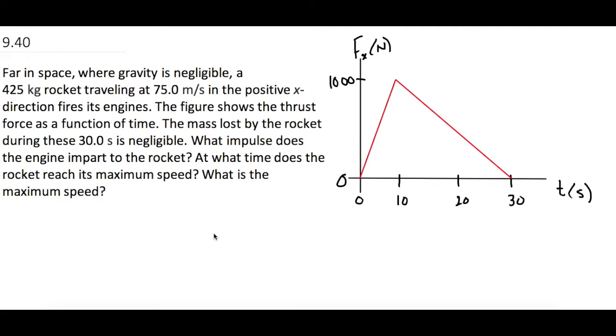Far in space where gravity is negligible, a 425 kilogram rocket traveling at 75 meters per second in the positive x direction fires its engines. The figure shows the thrust force as a function of time. The mass lost by the rocket during these 30 seconds is negligible.